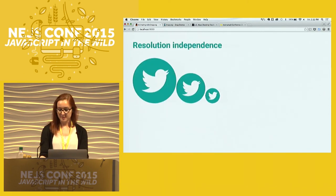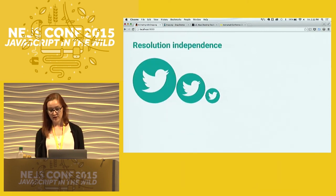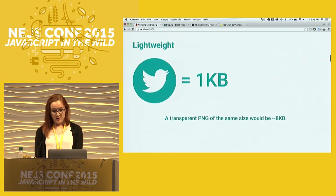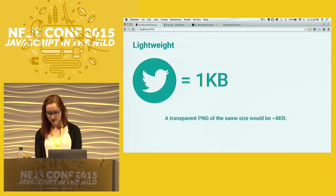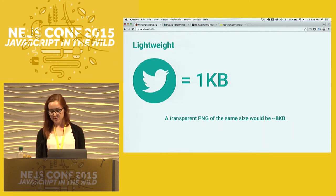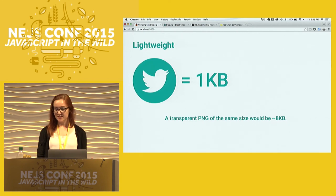As far as resolution independence goes, it'll look great at any size — it's never going to look fuzzy. Here you can see the exact same file repeated at three different sizes, and it maintains the same level of quality no matter how large it gets, even if the screen size is zoomed in. And it's lightweight — this file is one kilobyte, while the comparable PNG would be eight times that. Because SVG images are defined as text elements, they can be significantly smaller to download than your standard image files, so they're performant.